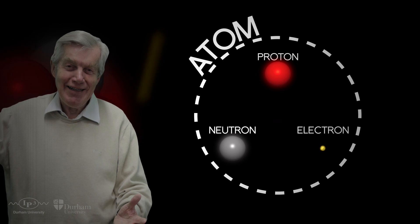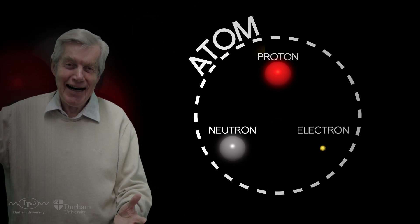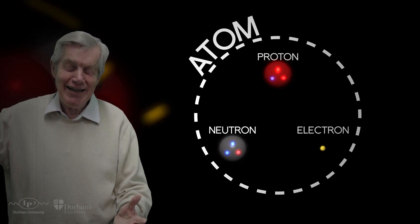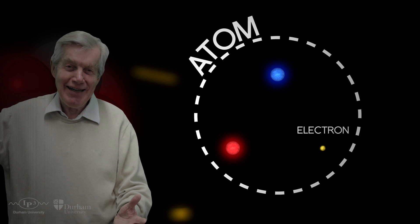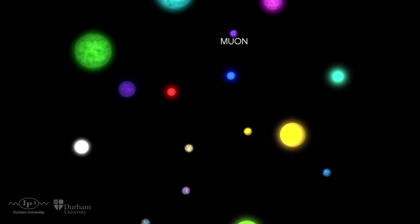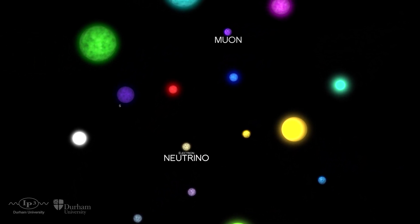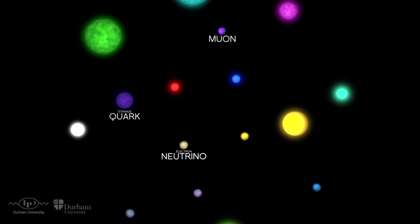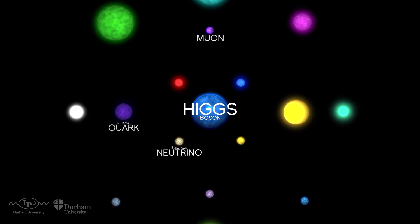We have known for a long time that atoms — that is, the things that we are all made of — are themselves divided into smaller building blocks. In fact, in the past hundred years, physicists have discovered a whole variety of subatomic particles, like muons, neutrinos, quarks, and more recently the Higgs boson.